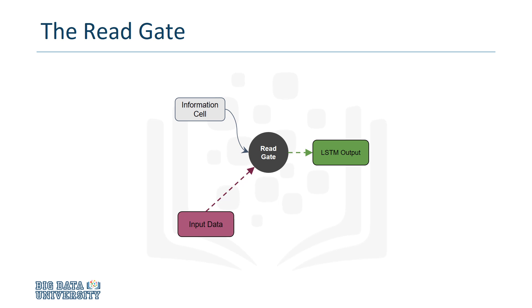The read gate is responsible for sending data from the LSTM back into the recurrent network. Like the other gates, it receives the inputs and state from the network. The read gate reads a value from the information cell, and this value is interpreted as a signal between negative 1 and 1. The input data and state are then used to determine how much of this signal should be sent to the recurrent network.